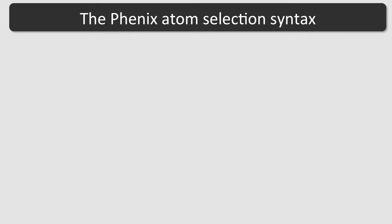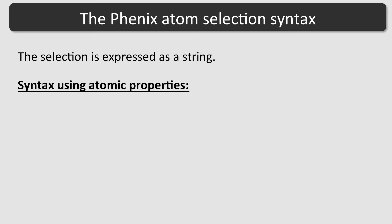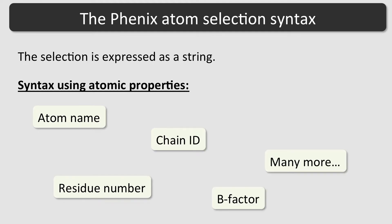The selection is expressed as a string, which is a sequence of characters or words, and is defined using a common syntax. The selection syntax uses atomic properties such as atom name, residue number, chain ID, the b-factor, and many more.